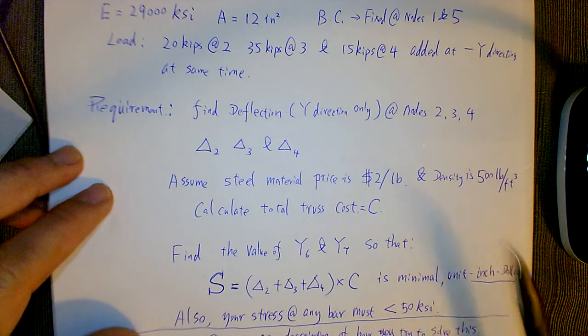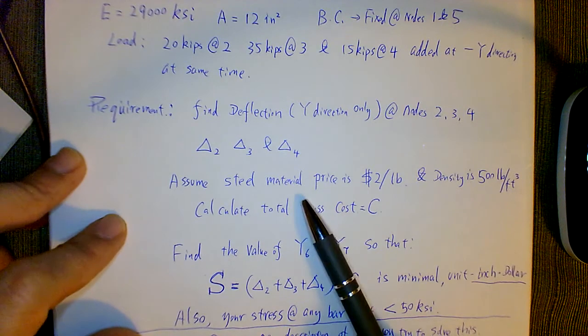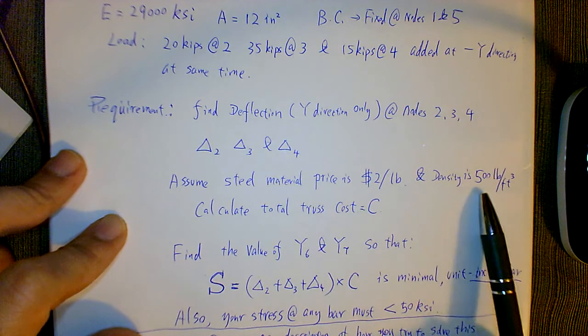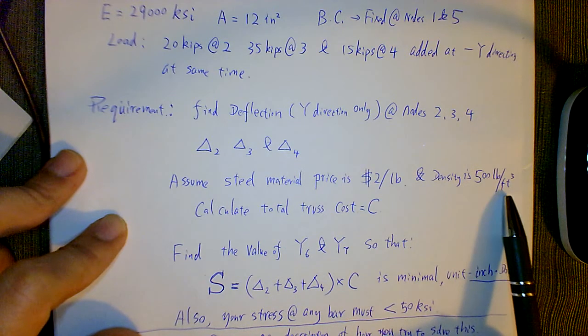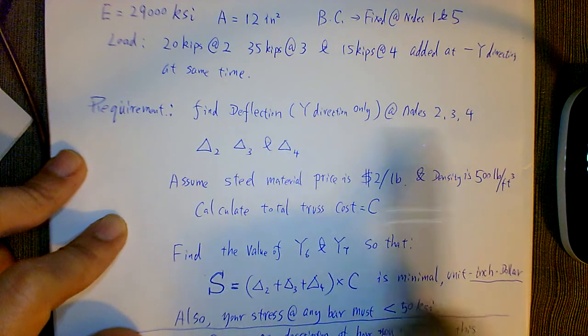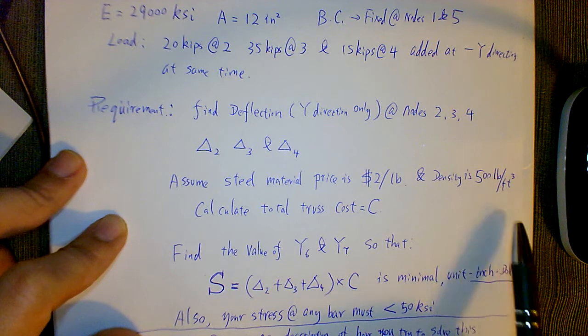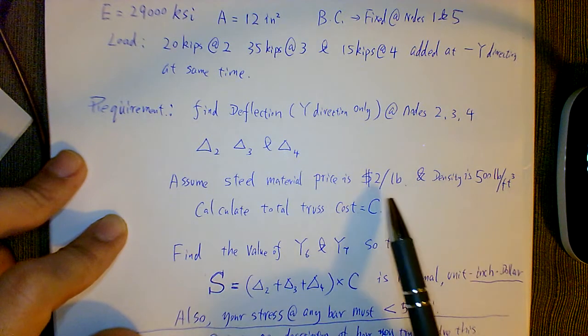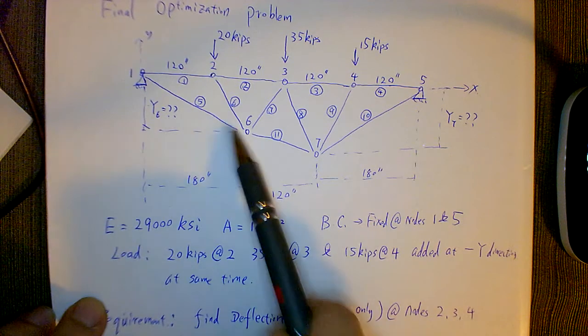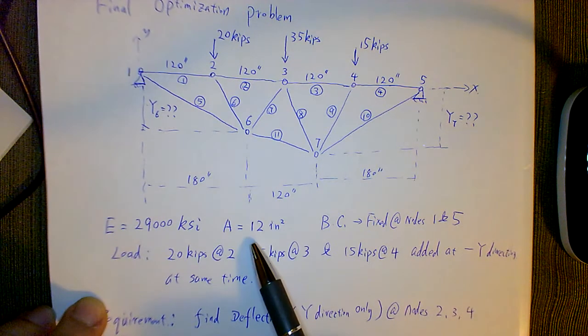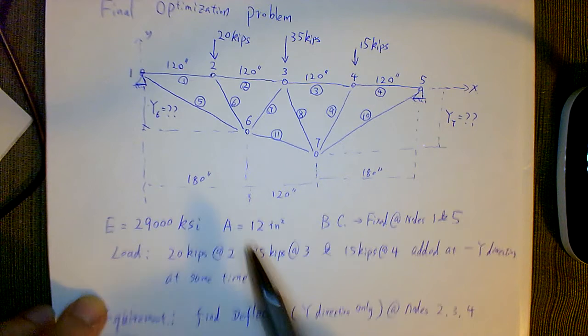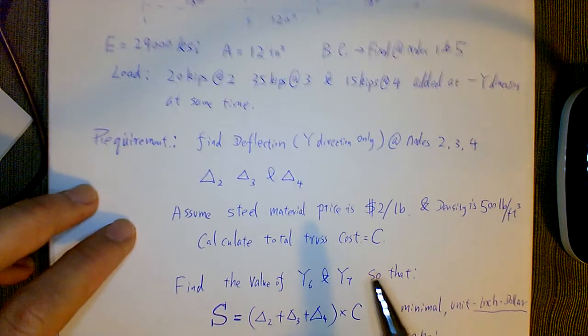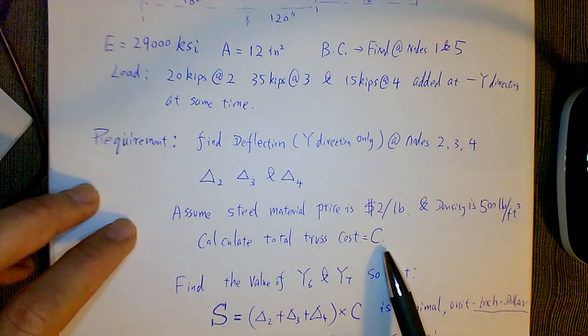So let's assume it's $2 per pound for steel material, and the density is 500 pounds per cubic feet. There's some unit conversion here—I have to see your work. Just be very careful. Once you get a design together, you can calculate all the lengths times the area, get the volume, get the pounds times 2. That will be your total cost C.